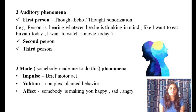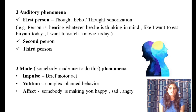The three made phenomena refer to the feeling that something is being done to you by an external force. These are: made impulse (a brief motor act you feel someone else caused), made volition (a complex planned behavior attributed to an external agent), and made affect (someone is making you feel happy, sad, or angry).